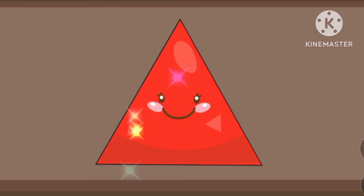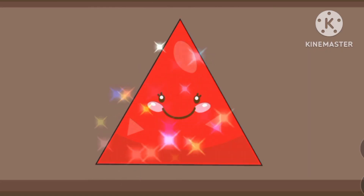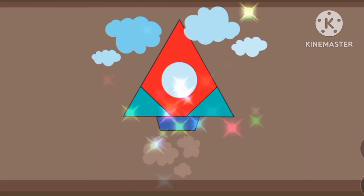A triangle, a triangle — the shape of a rocket. Green, green, the color of green. Green, green, the color of green.